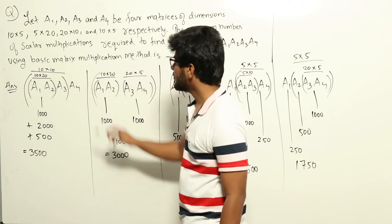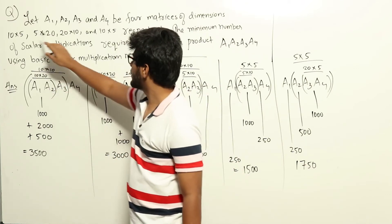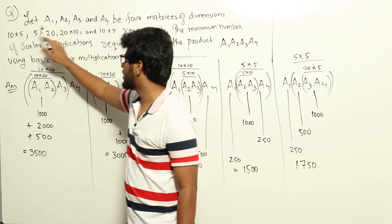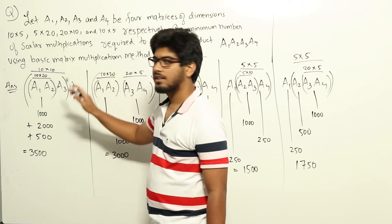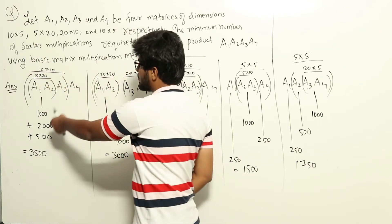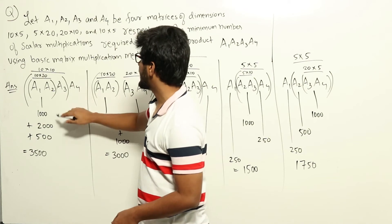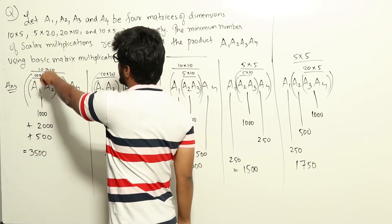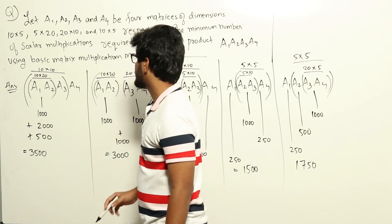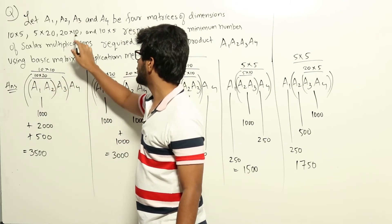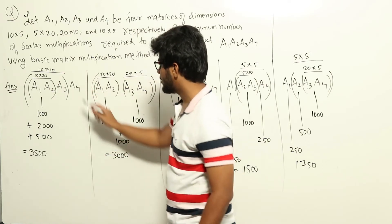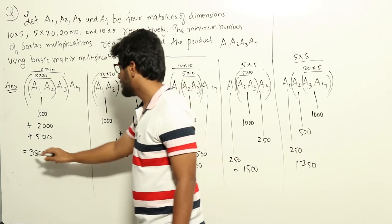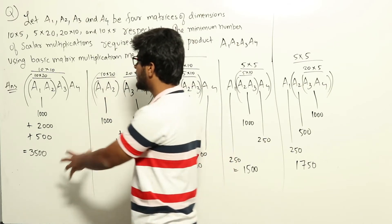In the first chain, multiplying A1 (10×5) and A2 (5×20) requires 10×5×20 = 1000 scalar multiplications, giving a 10×20 result. Multiplying that by A3 (20×10) adds 10×20×10 = 2000, giving a 10×10 result. Multiplying that by A4 (10×5) adds 10×10×5 = 500. Total: 3500 scalar multiplications for this chain.